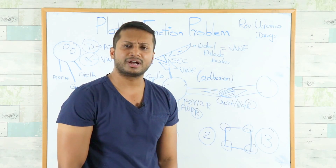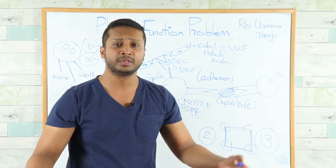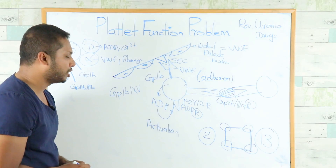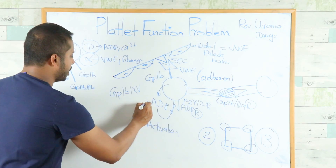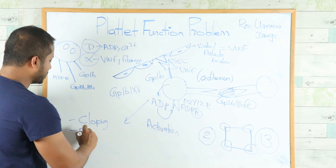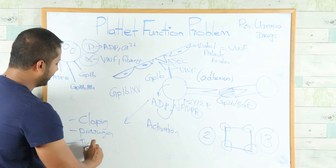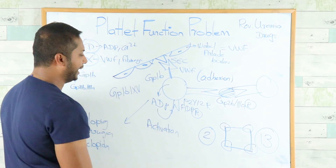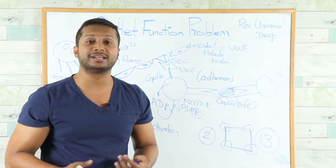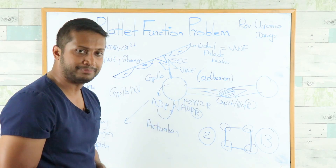You don't need to memorize drugs — just understand the mechanism. ADP receptor blockers, also called P2Y12 inhibitors — drugs such as clopidogrel, prasugrel, and ticlopidine — block the ADP receptor. As a result, GP2b3a is not expressed, and the platelet cannot function.